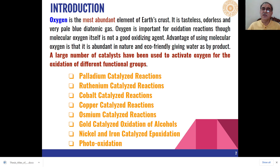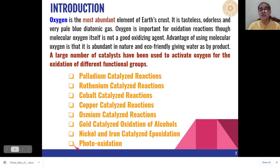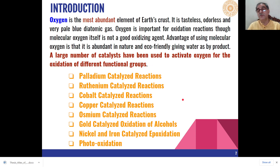A large number of catalysts are used to activate oxygen for the oxidation of different functional groups. The most common among these reagents are based on palladium, ruthenium, cobalt, copper, osmium, gold, nickel, iron, and even photo-oxidation in presence of oxygen can also take place. We will discuss these reactions one by one where molecular oxygen along with the reagent is used for different types of functional group transformations.